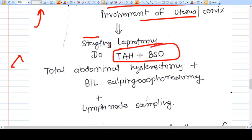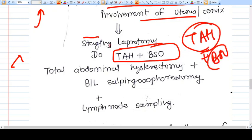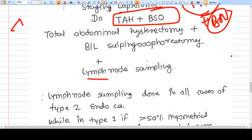On laparotomy you do hysterectomy. It is TAH, total abdominal hysterectomy, along with BSO, bilateral salpingo-oophorectomy, plus lymph node sampling.